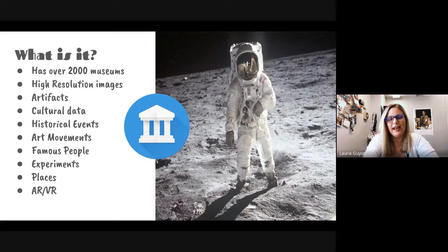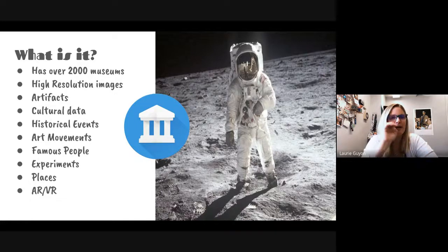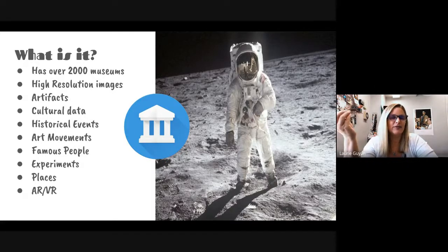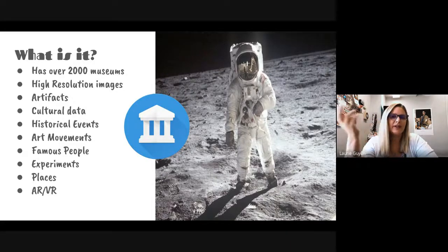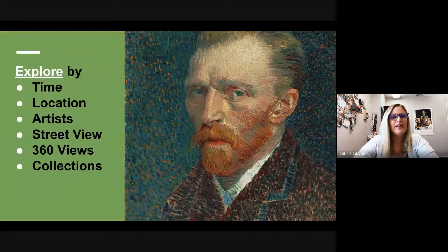It has artifacts, data about culture, historical events on a timeline, art movements, and tons on famous people — not celebrities, but people in history: authors, writers, scientists who made discoveries. It has Google Experiments, which are things Google is trying out using artificial intelligence and machine learning, pushing the boundaries on what is possible.